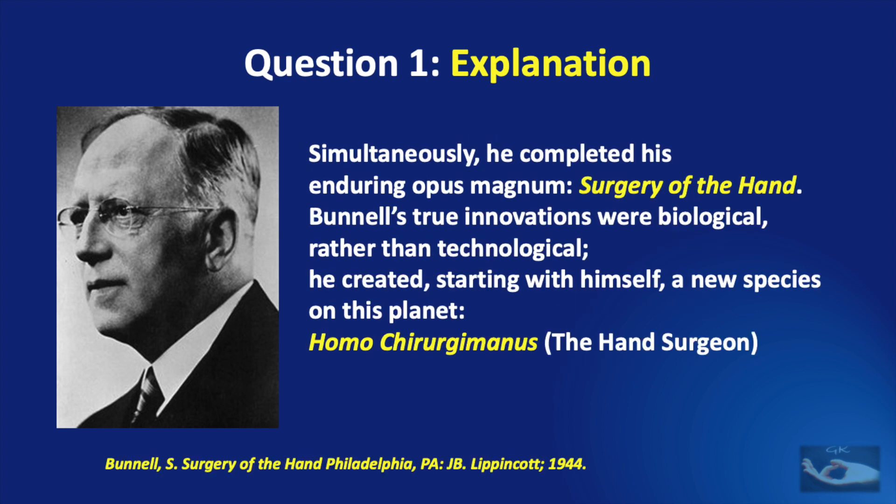Simultaneously, Stirling Bunnell completed his enduring magnum opus, 'Surgery of the Hand.' Bunnell's true innovations were biological rather than technological. He created, starting with himself, a new species on this planet: the Homo chirurgymanus, otherwise known as the Hand Surgeon.